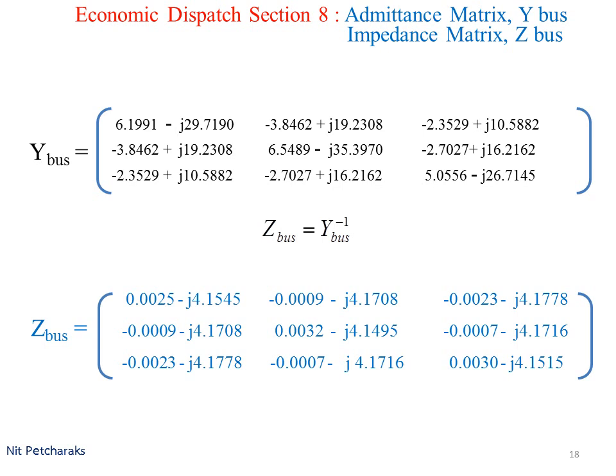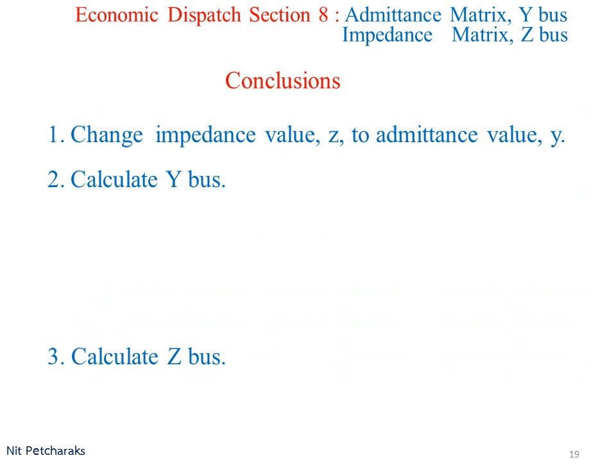In conclusion, we should find line admittance, which is the reciprocal of line impedance. Then calculate the element in Y bus. Yii is the summation of all line admittance linking between bus I and bus J.